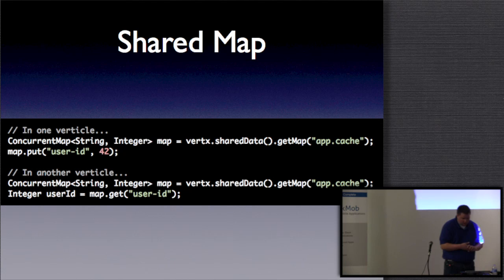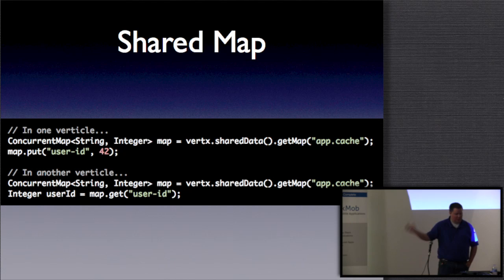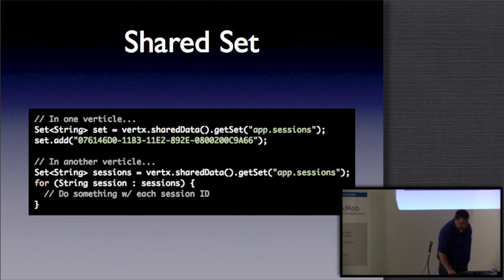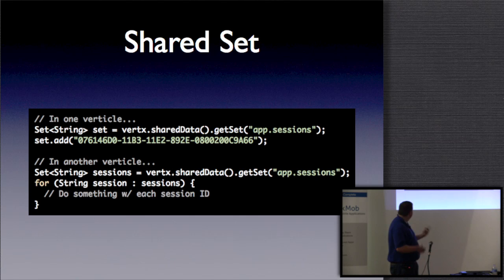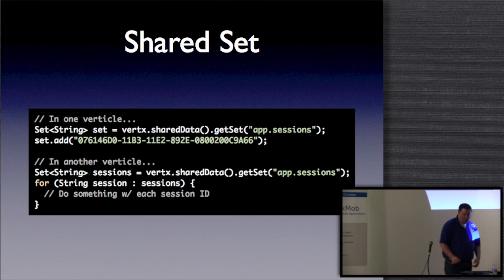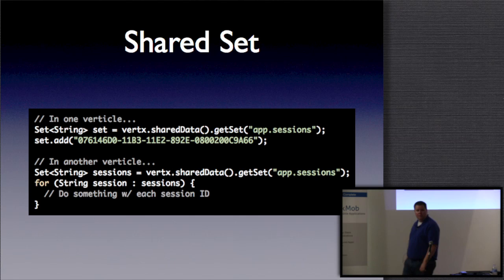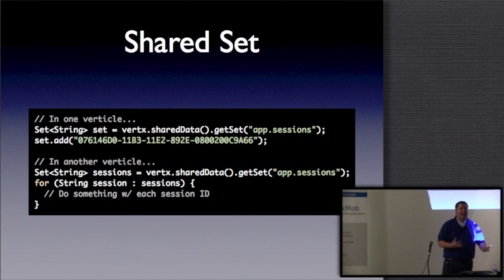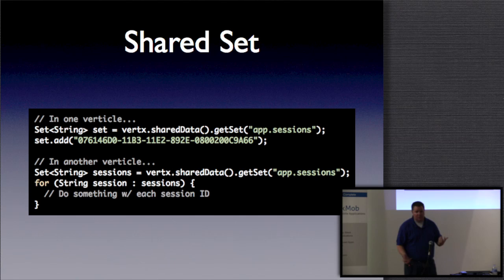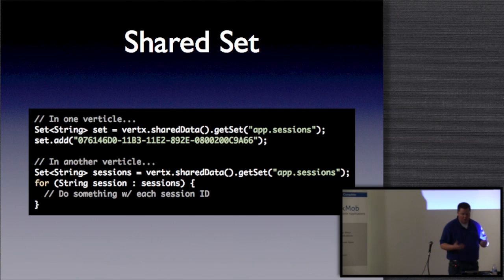For shared maps, in one Verticle you call `vertx.sharedData().getMap('app.cache')` — if it doesn't exist it creates the map — and put in a user ID of 42. In another Verticle you get the map back out and retrieve the value from the cache. Shared sets work similarly — get a set called 'app.sessions', put a session UUID in it, and in another Verticle loop through the sessions and do something useful. Between processes you now have two good stories: message passing where that makes sense, and shared data where that makes sense — both available out of the box.